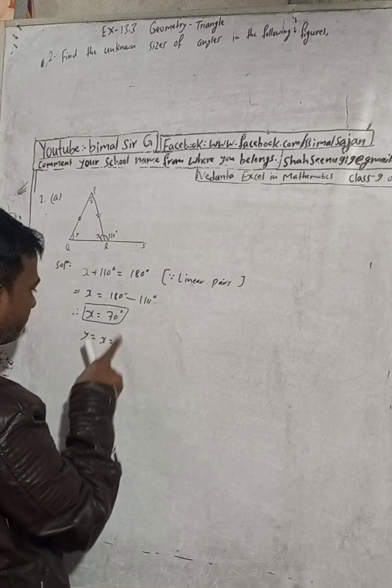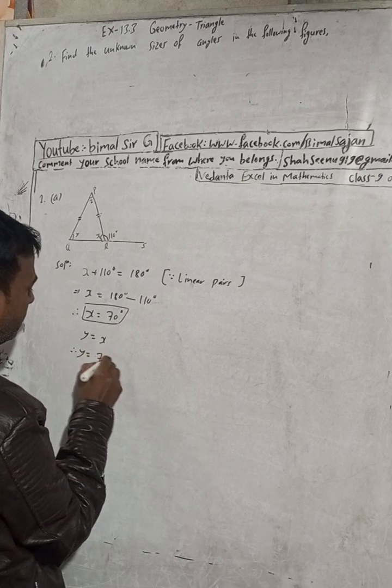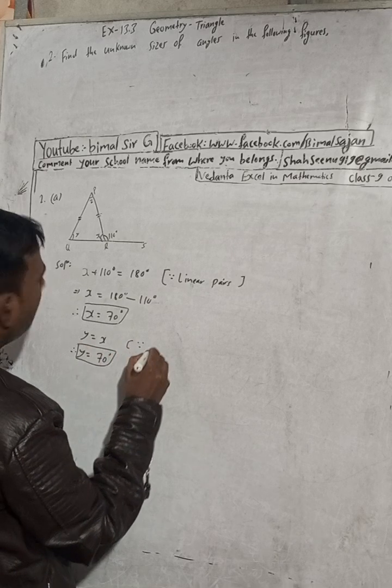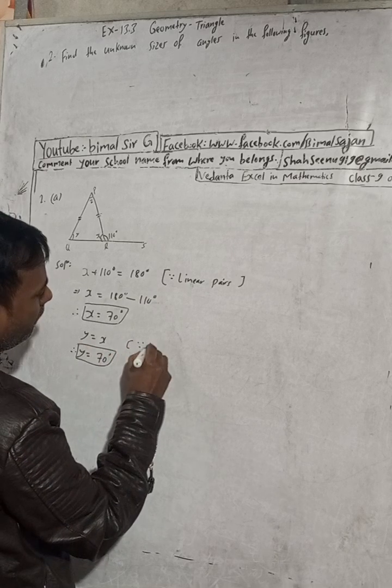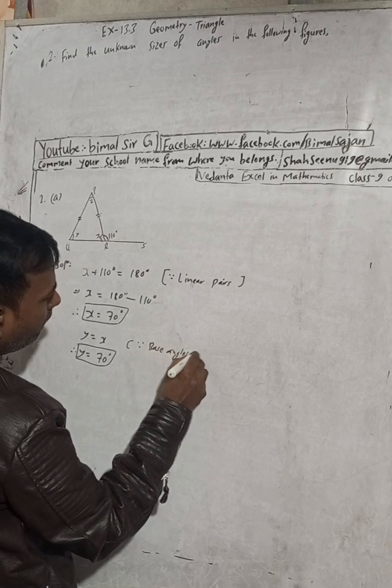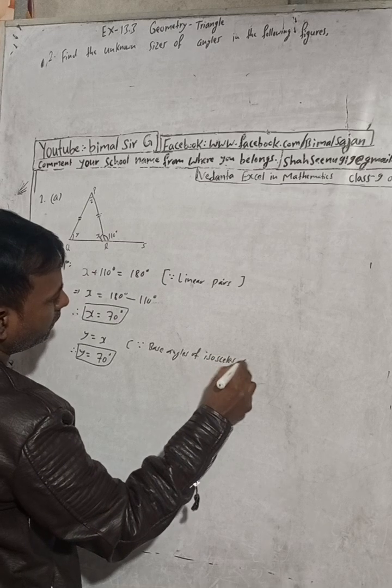All right, here y is equal to x, therefore y is equal to x, what is 70. So this is our second answer. The reason is base angles of isosceles triangle are equal.